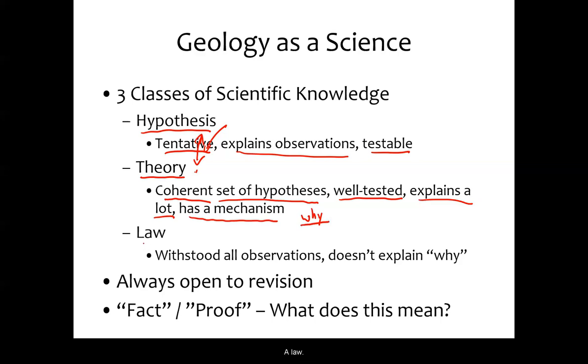In contrast, a law is maybe of a similar scope to a theory. It can explain a whole lot of things that go on, and it has withstood all observations. It's well tested, very well tested if you're going to call something a law. But it doesn't explain why. I'll add here that it's often mathy, or it has some mathematical description.